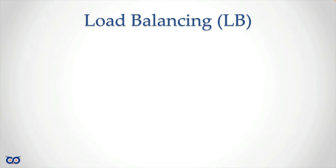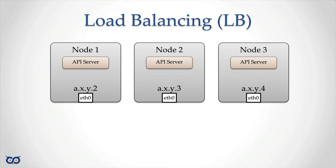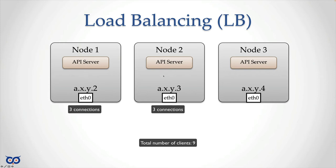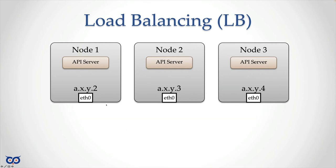Now let's talk about load balancing - it's very different from high availability. With load balancing we have multiple nodes and we want all of them available. When clients connect, some connections go to node one, some to node two, and some to node three. If you're serving nine clients, three connections on average land on each node, evenly distributing the load. There are different load balancing strategies - for example round-robin, where the first connection goes to node one, the second to two, the third to three, the fourth back to one.